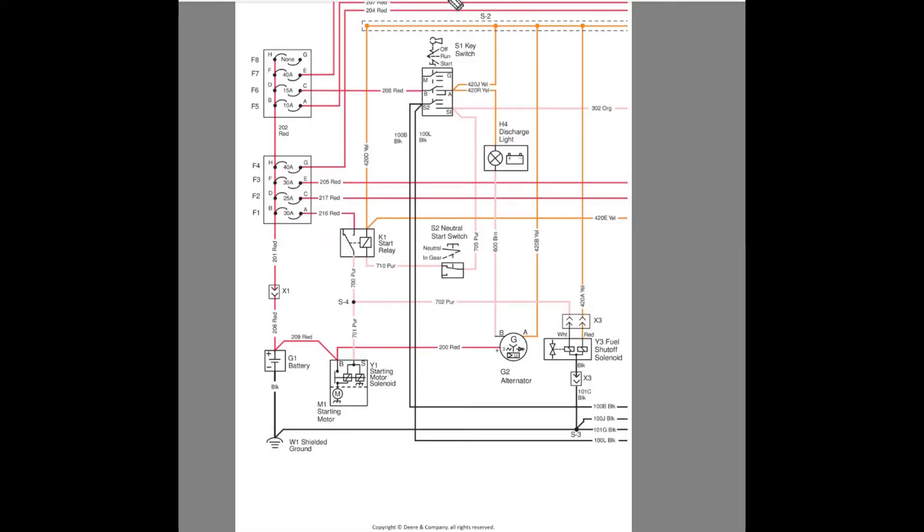Alright, so what we have here is the main schematic, at least the beginning of it, for the power feeds going to this machine. So, right off the bat we know we've got 12.5 volts at the battery. But we have nothing going on at the key switch. We don't have any of the lights on the dashboard. Start relay is not engaging. Starter motor is not cranking over.